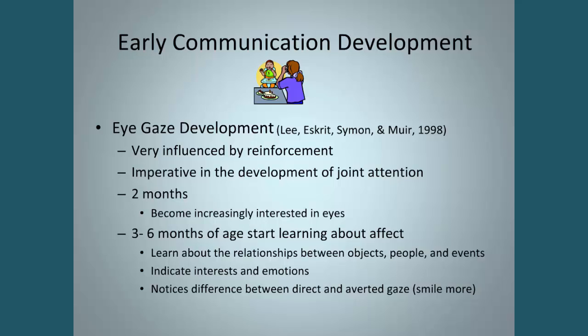By two months, infants become really interested in eyes and start seeking out eyes. By three to six months of age, they start learning about affect — the relationships between objects, people, and events — and they indicate some interest in emotions. They notice the difference between when you're looking at them and when you're not, and you'll notice that they smile more when you're looking at them.